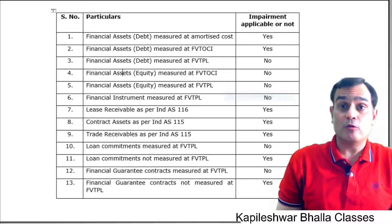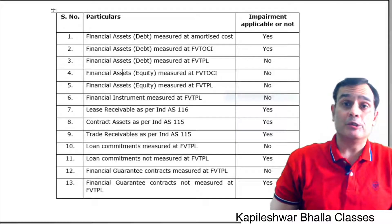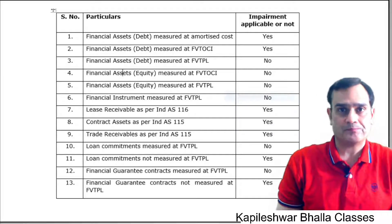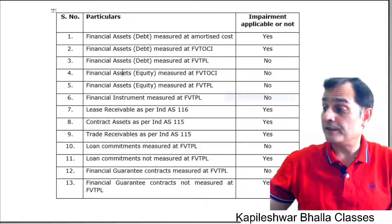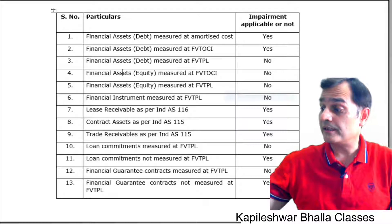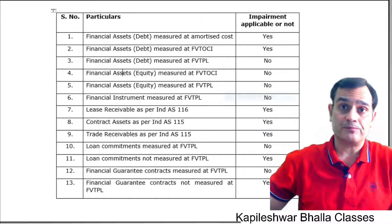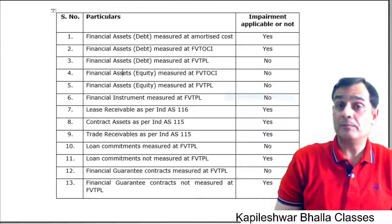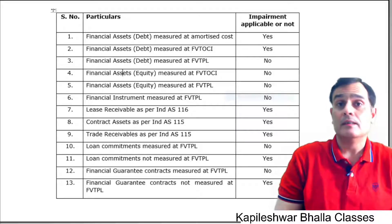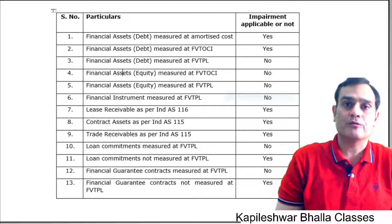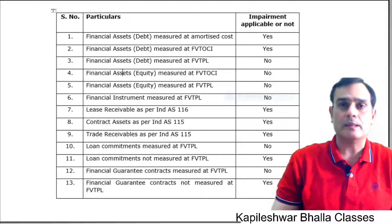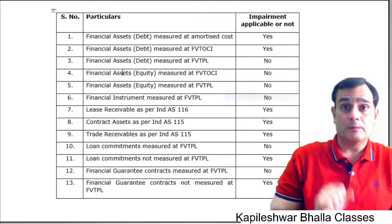For point number one, we are talking about financial assets debt measured at amortized cost (AC). Equity instruments are not measured at amortized cost — it is only financial asset debt that is measured at AC. So impairment testing applies here, because we don't consider any fair value concept in the subsequent measurement of financial asset debt. After initial recognition at fair value, we only apply the effective interest rate method.